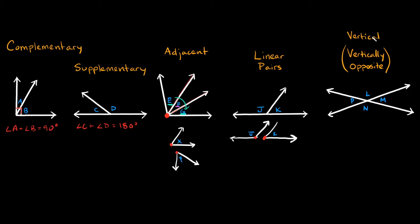Now let's talk about vertical angles, sometimes called vertically opposite angles. The easiest way to remember them is just as opposite angles. They're created by the same two intersecting lines. So opposite angles here — L and N would be opposite angles, and they are congruent, meaning they are the exact same angle. The same is true for the other opposite pair, P and M — this angle is congruent to that angle.